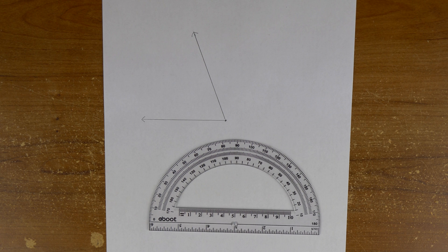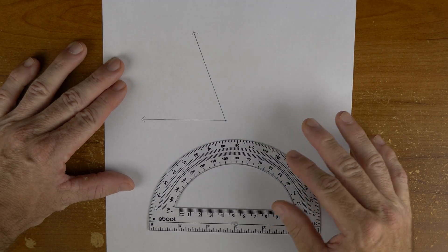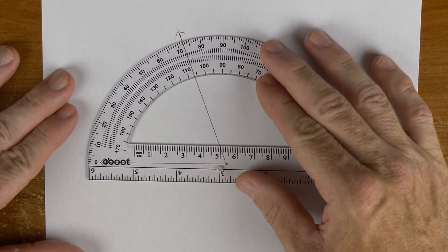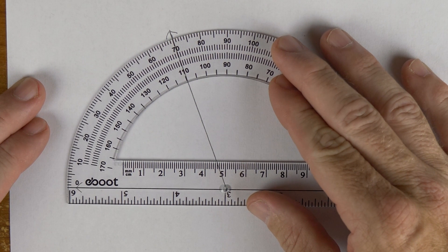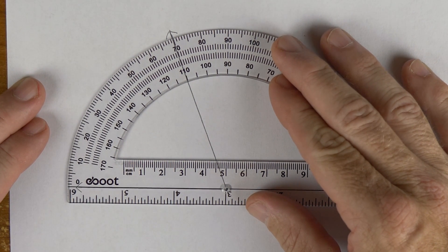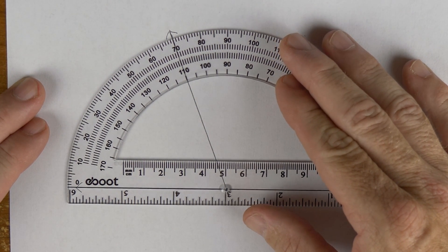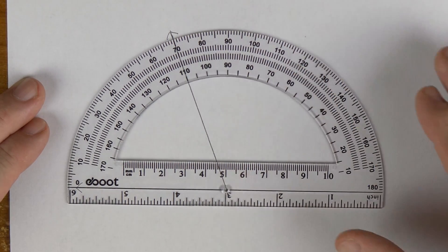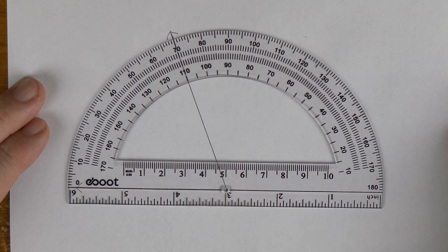Now let's say that we want to measure this angle on the paper here. To do this, we use a protractor that you see here. We line up the vertex of the angle with this hole, and line up one of the sides of the angle with the baseline here on the protractor. Then we check where the other side of the angle lines up with the tick marks. You can see that it lines up with 70 degrees. So this is a 70 degree angle.